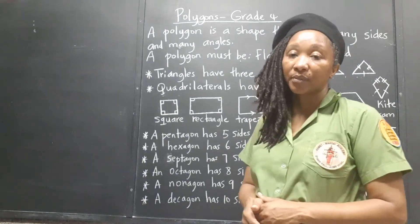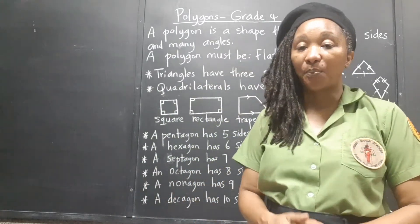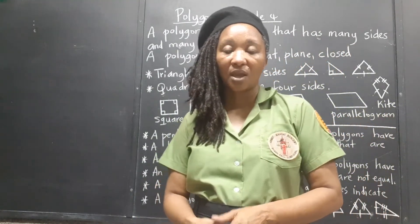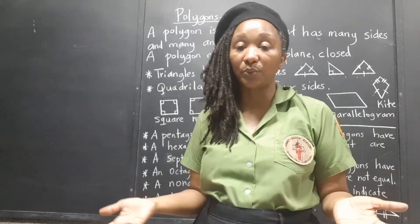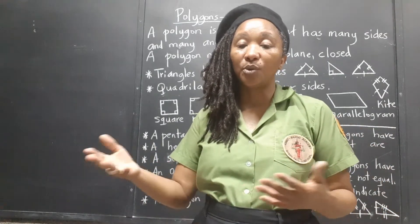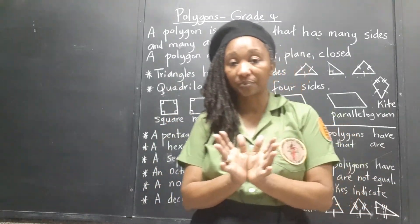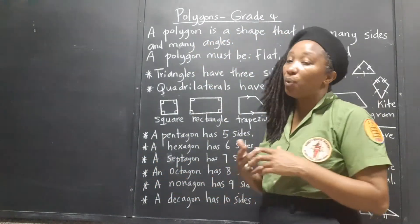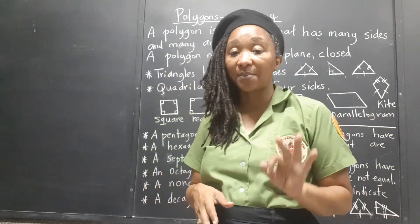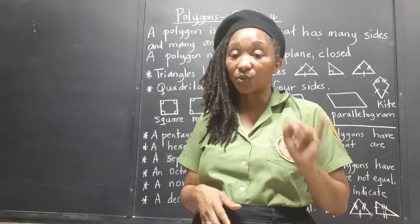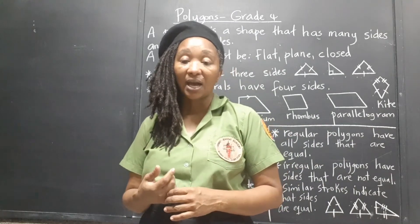So this is the basic information on polygons. 'Poly' means many, 'gon' means angle, which essentially means sides too, because if you have many angles you automatically have many sides. The polygon must meet all three criteria at the same time — not two, not one. All three must be met for a shape to be classified as a polygon.